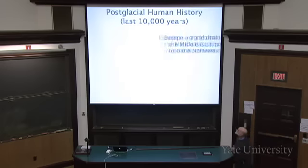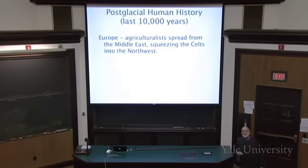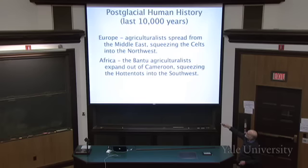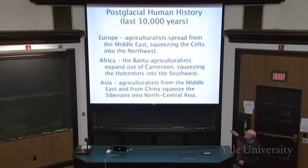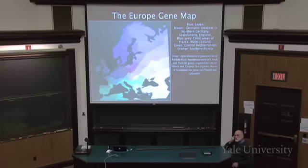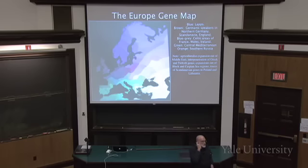Now what about humans? In about the last 10,000 years, agriculture was spread out from the Middle East and squeezed the Celts into the northwest. In Africa we see the Bantu migration out of Cameroon, and how the Hottentots were squeezed into the southwest of Africa. In Asia, agriculture was spread from both the Middle East and from China, and squeezed Siberians into the north. These things are laid out in a beautiful book by Cavalli-Sforza, Paolo Menozzi, and Alberto Piazza.